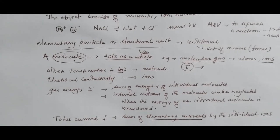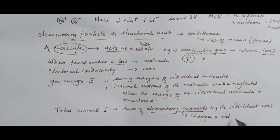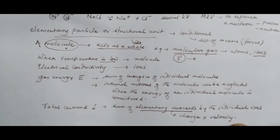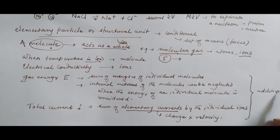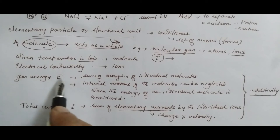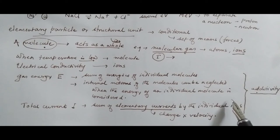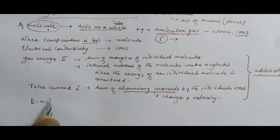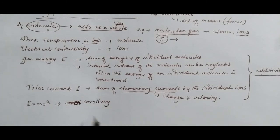An elementary current of an individual ion is equal to charge times velocity. This concept of elementary particle essentially includes the additivity of something consisting of those introduced elementary particles. This particular requirement of additivity of what a body consists of is demonstrated especially clearly for the concept of mass.